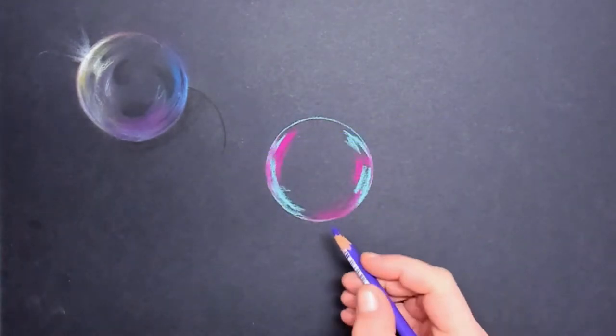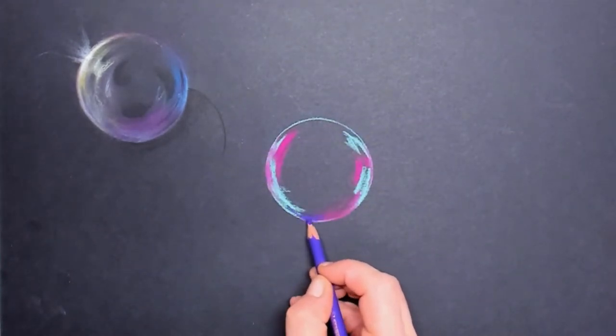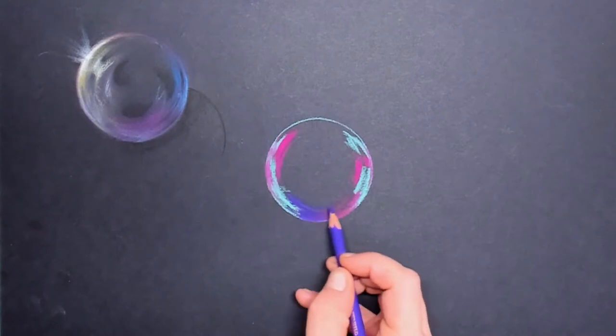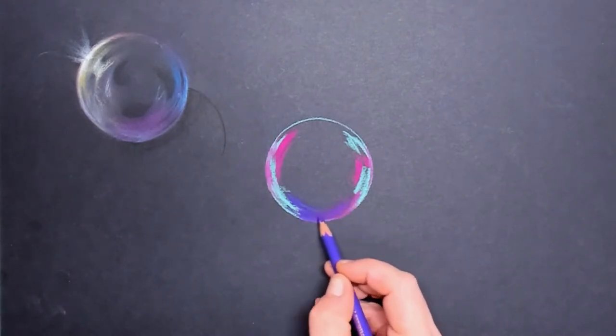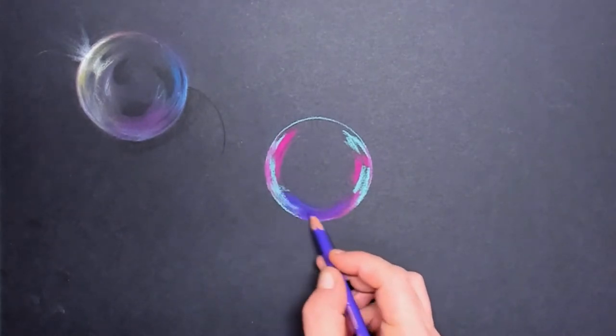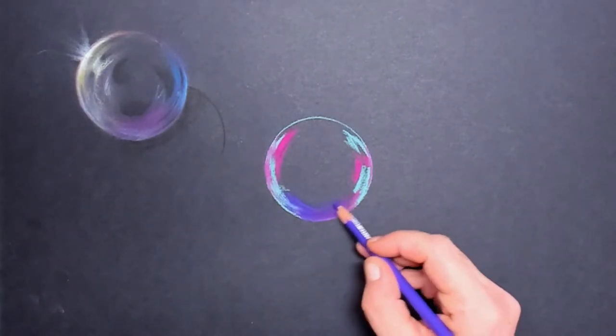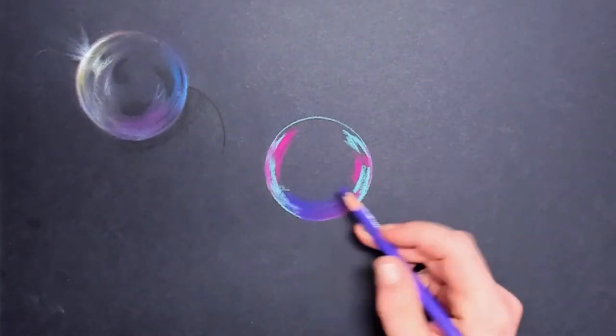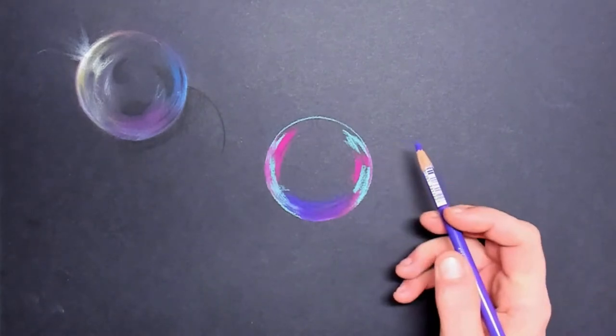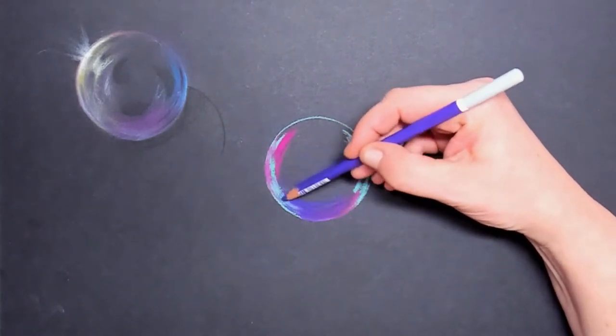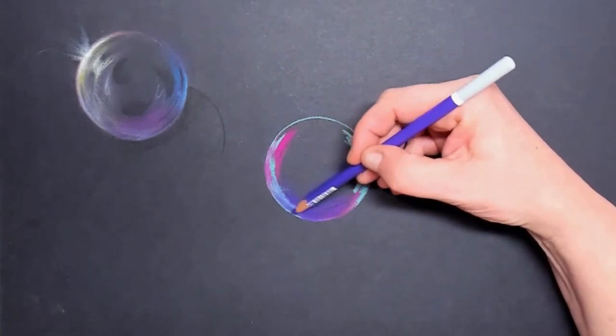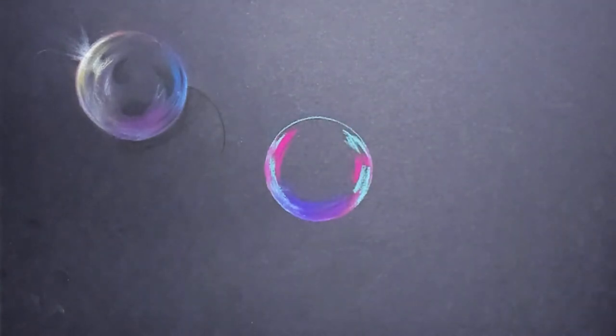Then I'm taking a dark blue. I think that would look nice on the bottom part of that bubble. So I simply draw this in and these are pastel pencils of course but you can also try this out with your standard color pencils.